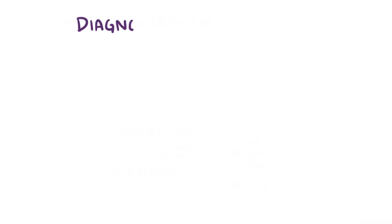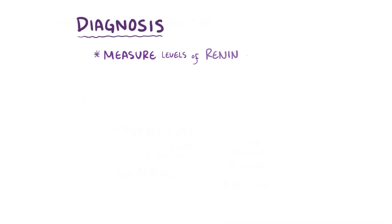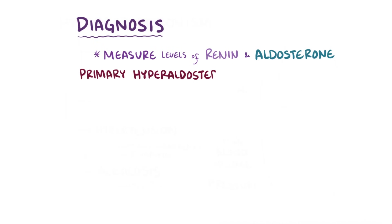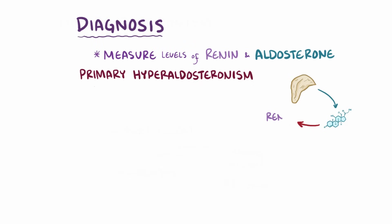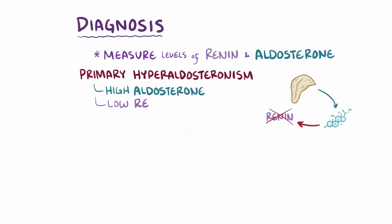The diagnosis of hyperaldosteronism is mainly done by measuring levels of renin and aldosterone. In primary hyperaldosteronism, the main problem is that the zona glomerulosa cells secrete high levels of aldosterone, and that aldosterone has a negative feedback effect on renin, inhibiting renin production. So in this case, aldosterone levels are high and renin levels are low.